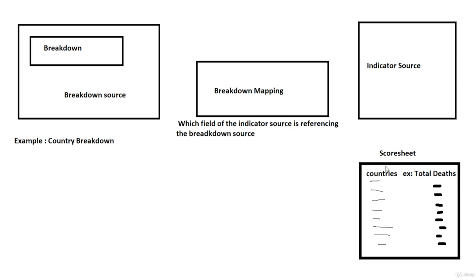This is the score sheet. Let's say we're building the score sheet manually so we can understand why we need a breakdown mapping. If we understand how the score sheet is built, we can figure out why we need a breakdown mapping. Here I have the countries on one side and, for example, total dead as a result on the other side.